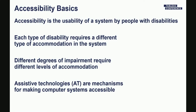So the basics: what is accessibility? It is the usability of a system by people with disabilities. There are many different types of disabilities: vision impairments, deafness, hearing loss, cognitive limitations, limited movement — all of those are the types of disabilities we think about when we talk about accessibility. Each disability requires a different type of accommodation within a system to make it more accessible. Within each class of disability, there's a range of impairments from very minor to much more severe.